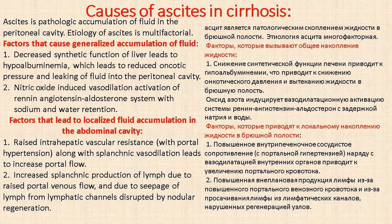Causes of ascites in cirrhosis: ascites is the pathologic accumulation of fluid in the peritoneal cavity. It is multifactorial. Decreased synthetic function of the liver leads to hypoalbuminemia, which leads to reduced oncotic pressure and leaking of fluid into the peritoneal cavity. Nitric oxide-induced vasodilation activates the renin-angiotensin-aldosterone system, causing sodium and water retention. Raised intrahepatic vascular resistance with portal hypertension and splanchnic vasodilation lead to increased portal flow and lymph production.